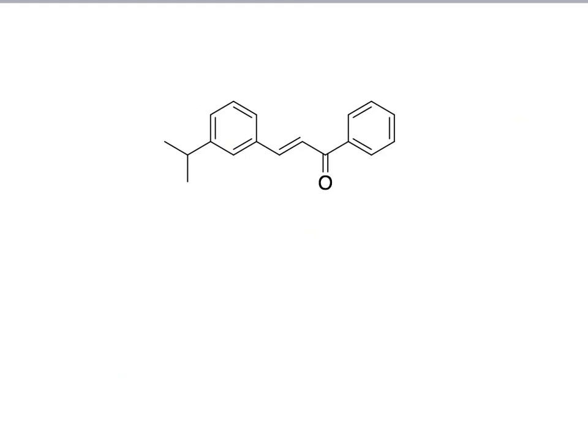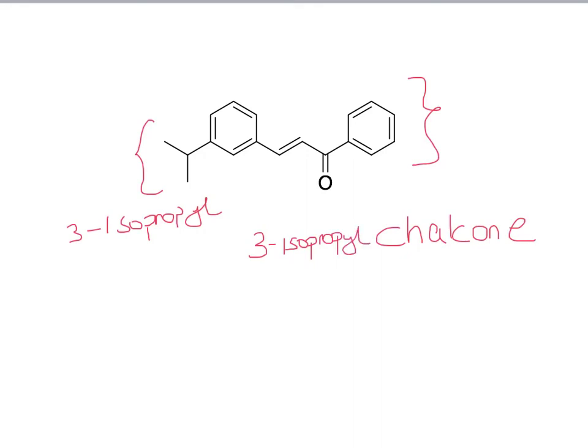Similarly, when you name this one, again, this is just a chalcone. You don't have to name this side because it's understood that that doesn't have any substituents. But this side, you still have that isopropyl. So you have isopropyl, three-isopropyl. So when you write it, you will just have three-isopropyl chalcone. And so there you have two different examples of how to name your chalcone.